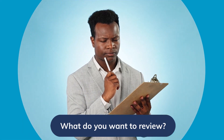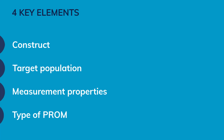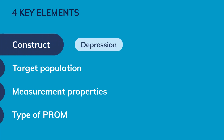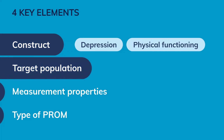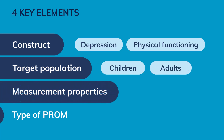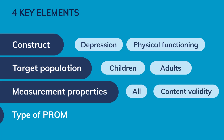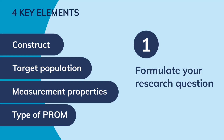First, you need to know what you want to review. Every systematic review starts by defining 4 key elements: What is your construct of interest — for example, depression or physical functioning? What is your target population — healthy children or adults with diabetes? What measurement properties do you want to evaluate — all 9 of them or only content validity? What type of PROM do you want to include — all disease-specific or generic PROMs? In step 1, you use these 4 key elements to formulate your research question.